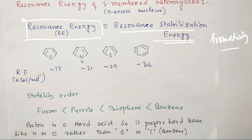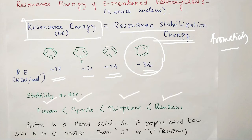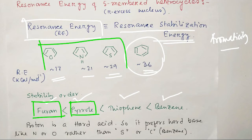If you look closely, benzene has a resonance energy of around 36 kcal/mol, whereas thiophene is 29 kcal/mol. For pyrrole it is 21 and for furan it is pretty low at 17 kcal/mol. This exactly gives the stability order: benzene is most stable, then thiophene, then pyrrole, then furan. From this we can conclude that furan is expected to be most reactive, pyrrole second, and thiophene least reactive among the heterocycles.